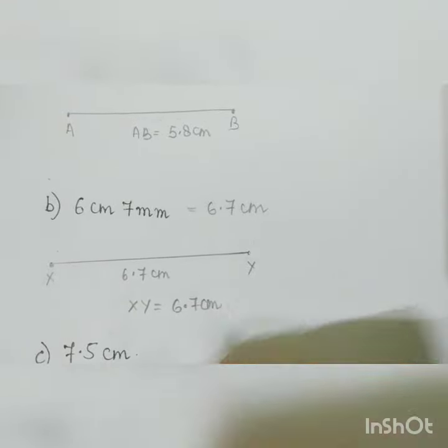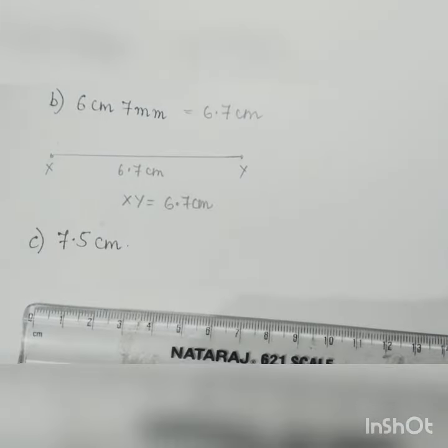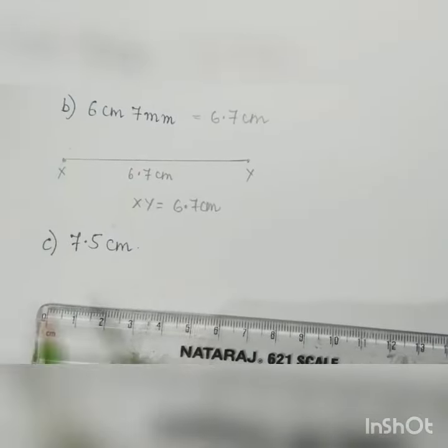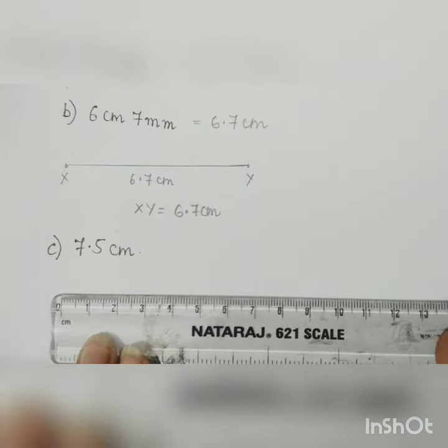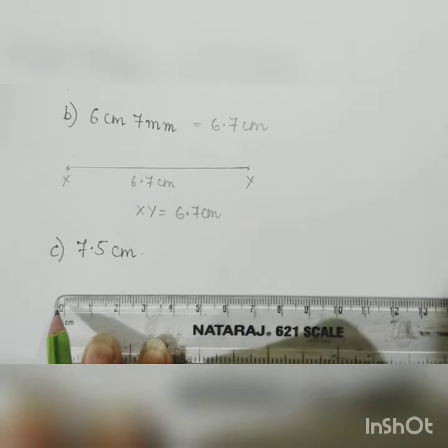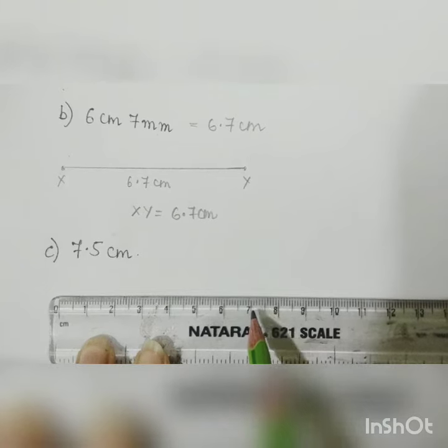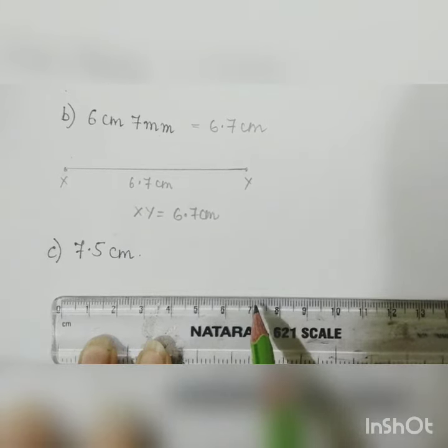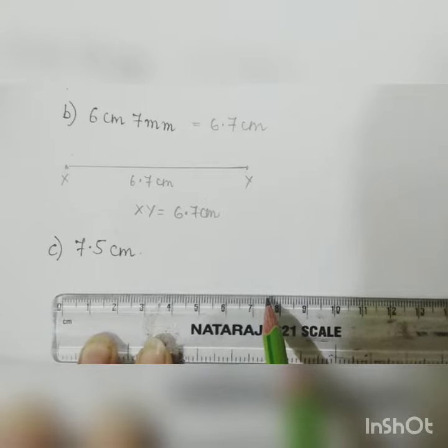Next is your 7.5 centimeter. Now we have to draw a line of 7.5 centimeter. Now from this scale we can draw a line of 7.5 centimeter. Now see, this is 0 and this is 7. From here we'll count the 5 lines, these 5 lines: 1, 2, 3, 4, and 5. This is 7 and half you can say, or you can put these line 7.5.